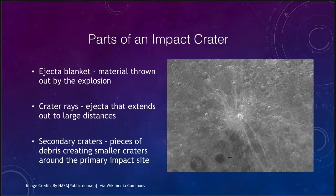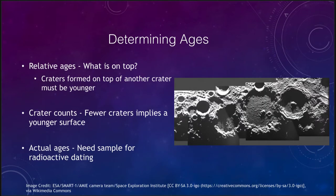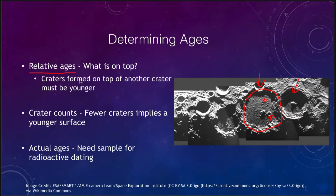Now let's look at determining the ages of craters. The easiest way is to use relative ages, which has to do with what is on top. If you look at an old crater — perhaps a large one in the middle — we know it's older than other craters that overlap it. Those craters could not have been there first because this crater would have wiped out parts of them. So craters formed on top of another crater must be younger — the younger object is always going to be on top.